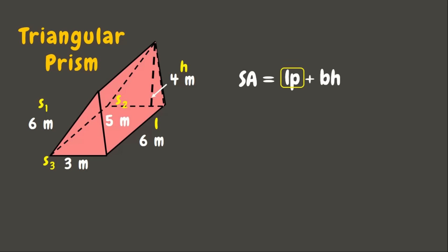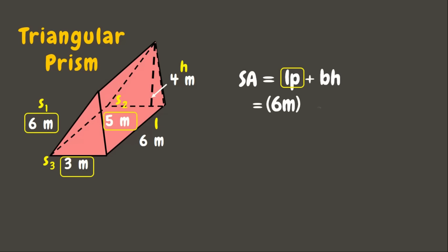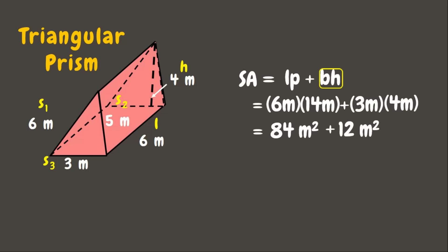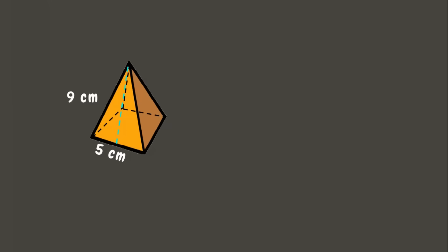First, the length is 6 meters times the perimeter of our triangle, which is the sum of its sides: 6 meters plus 3 meters plus 5 meters, equaling 14 meters. Next, we have base times height — base is 3 meters times the height of the triangle, which is 4 meters. So 6 times 14 is 84 square meters, plus 3 times 4 is 12 square meters. Adding the two areas gives 96 square meters — the surface area of this triangular prism. Awesome!